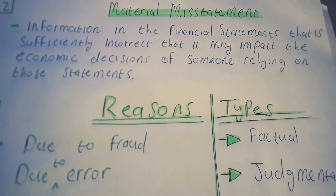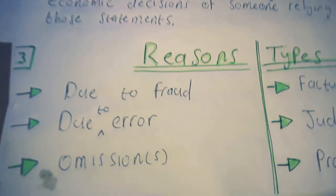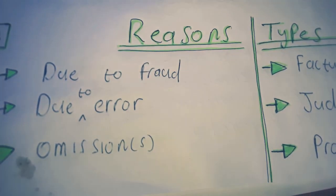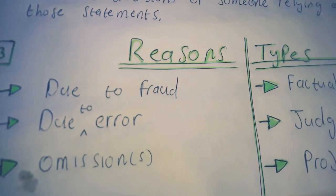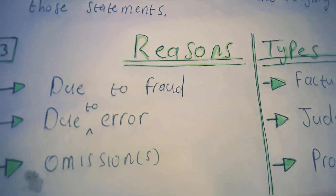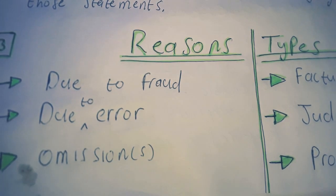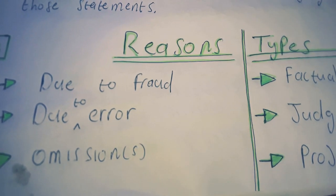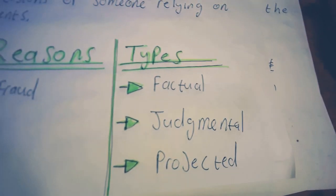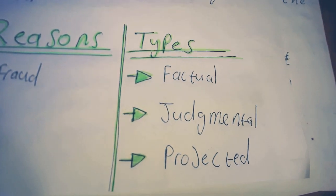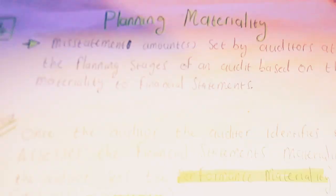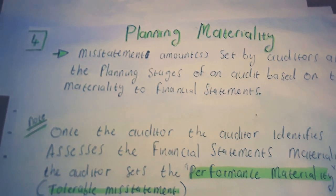External users such as banks might grant loans to entities thinking that money is being made, if the material misstatement is big enough to cause those kinds of impacts. Some of the reasons for material misstatements include fraud, error — perhaps by an inexperienced accountant or bookkeeper — or sometimes an omission by mistake. The types of misstatements you can get are the factual, the judgmental, and the projected.